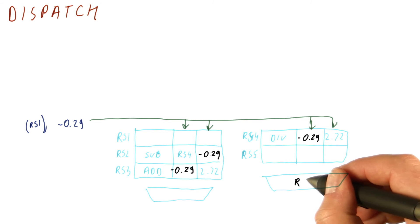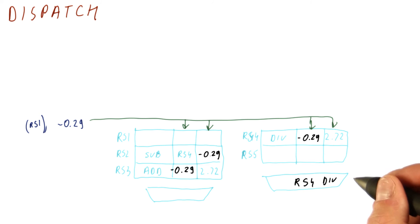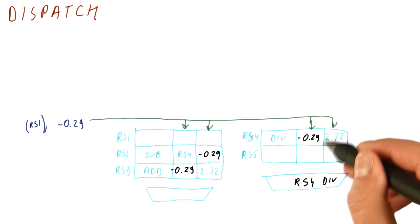So the multiplier for a while, it will be busy with RS4. This is a divide. And it's going to be basically doing this over this.